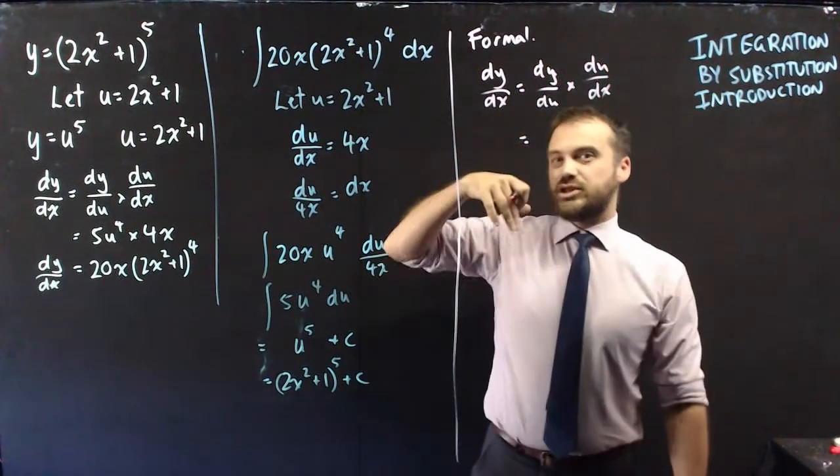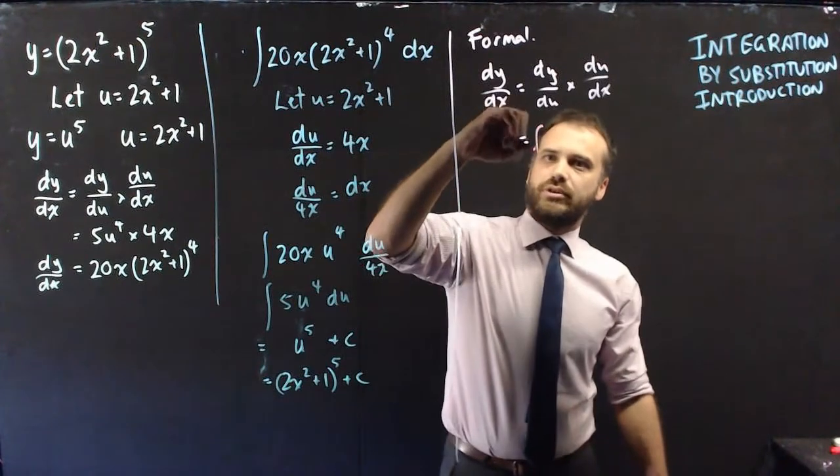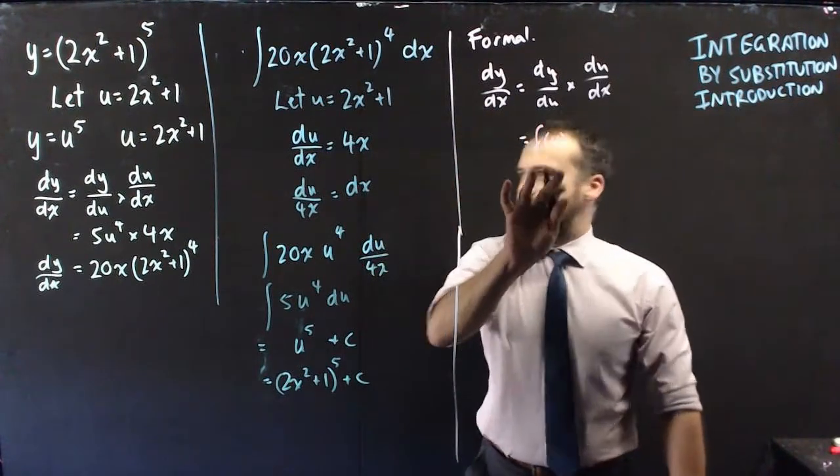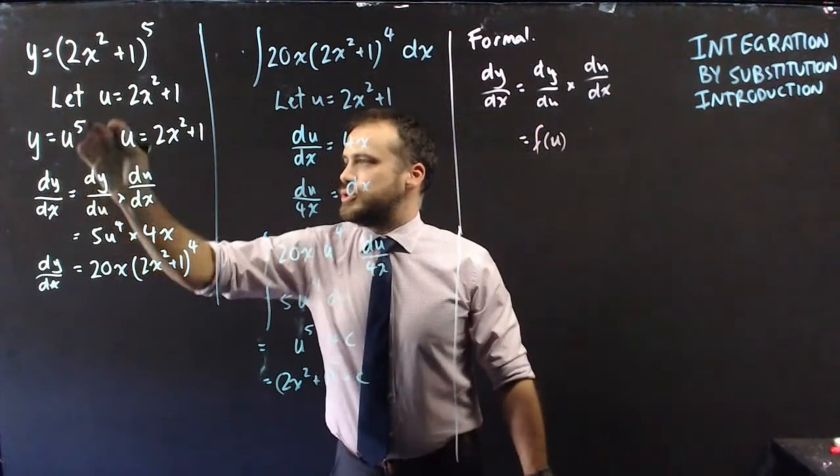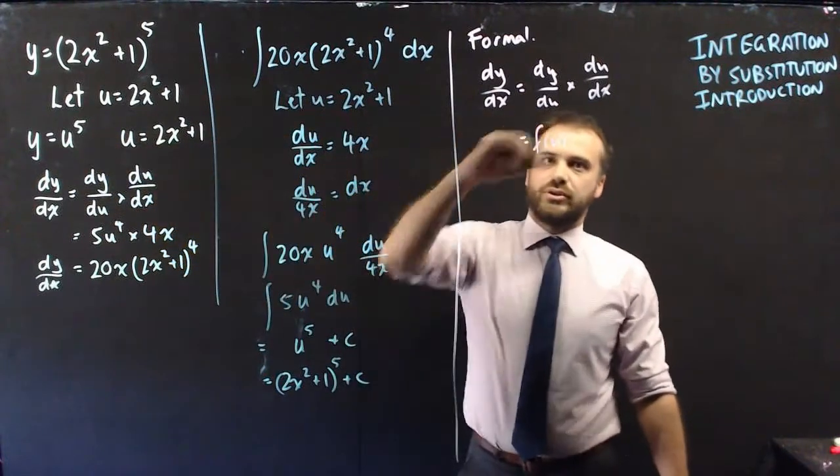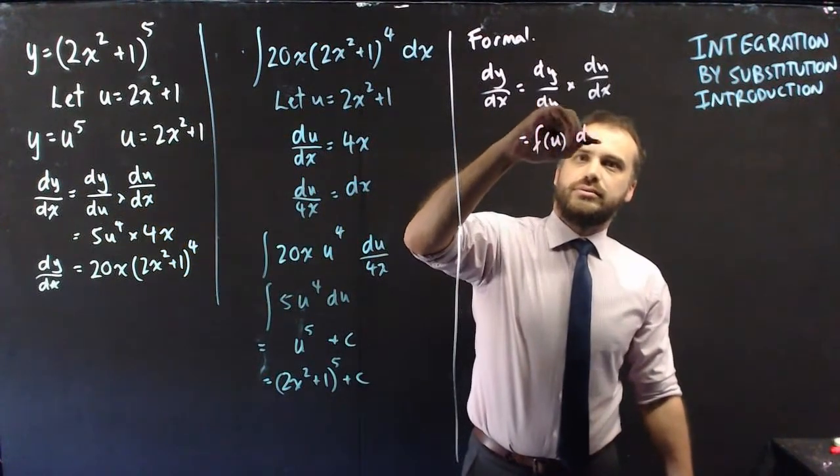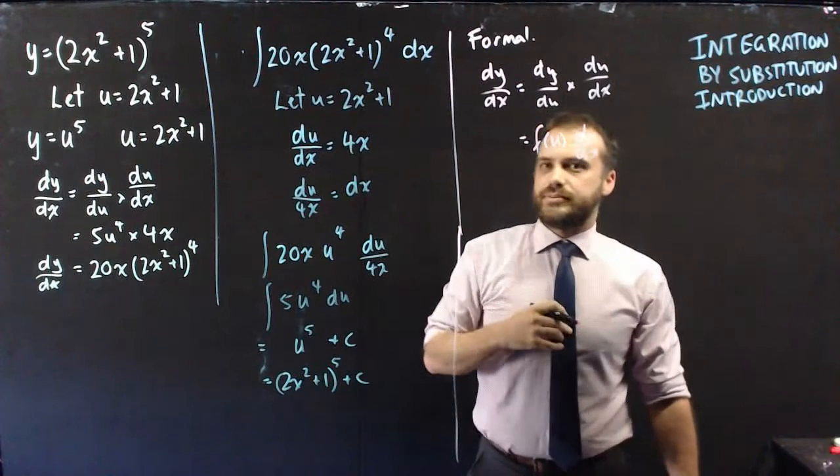This dy/du, that's always like just some function of u. So I can write f(u). In this case, it was y equals u^5. That's a function of u. And then du/dx.